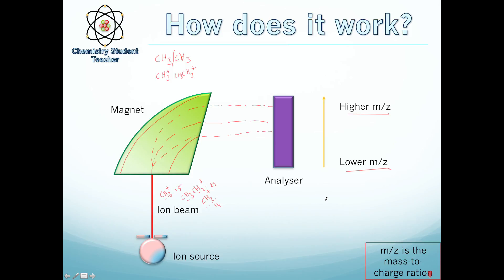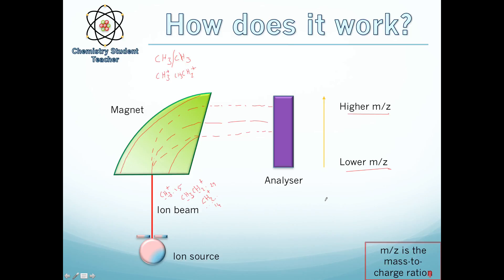So what does the spectra that comes out of this machine, what does it look like? Well, the spectra looks something like this. This is one taken from ethane, so CH3CH3. And there's a few key things to point out on here.